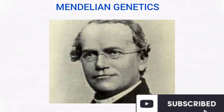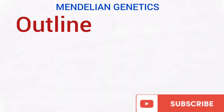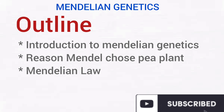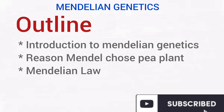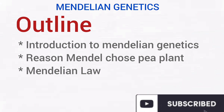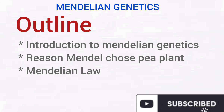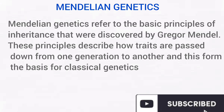Welcome to Science Assets. In today's class, we're going to be talking about Mendelian genetics and we'll be following this outline: introduction to Mendelian genetics, the reason why Mendel chose the pea plant, and we'll also talk about the Mendelian laws — the first law, the second law, and the third law of Mendel.